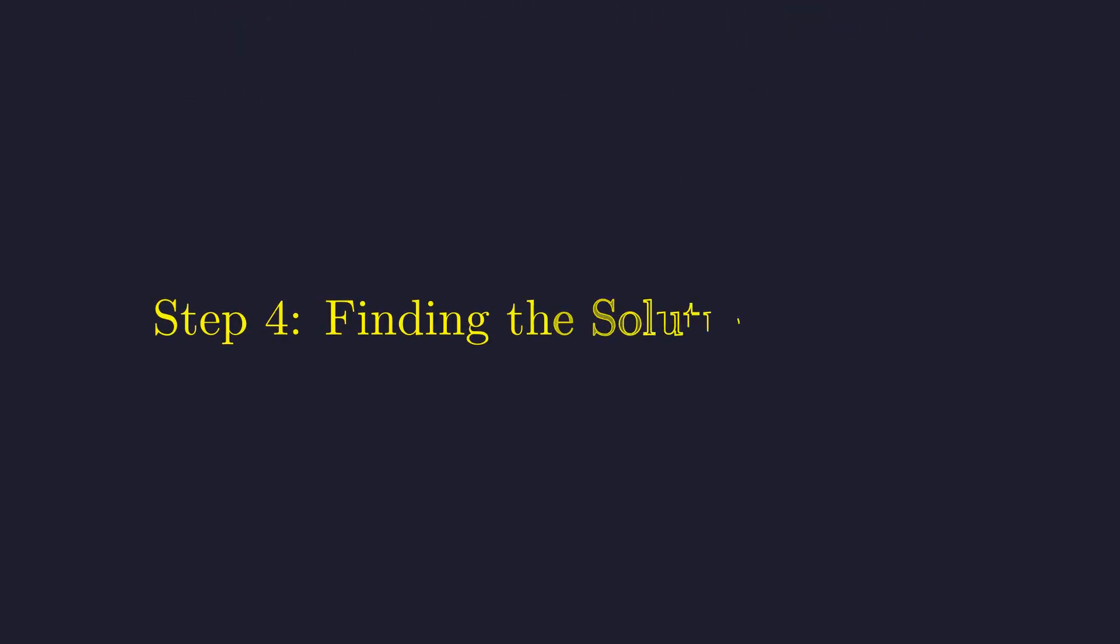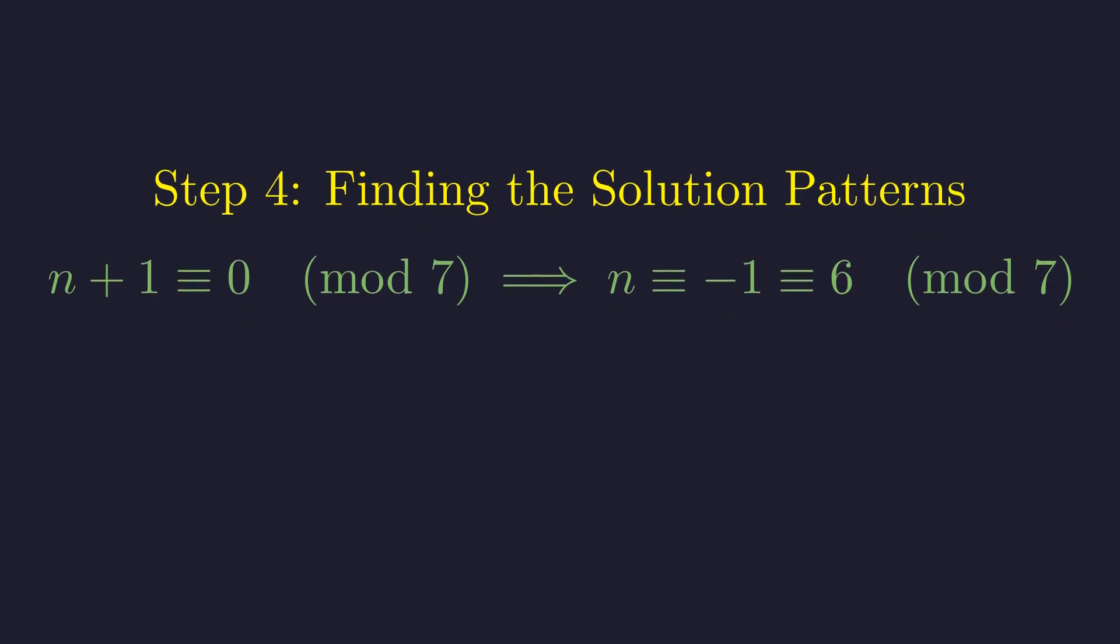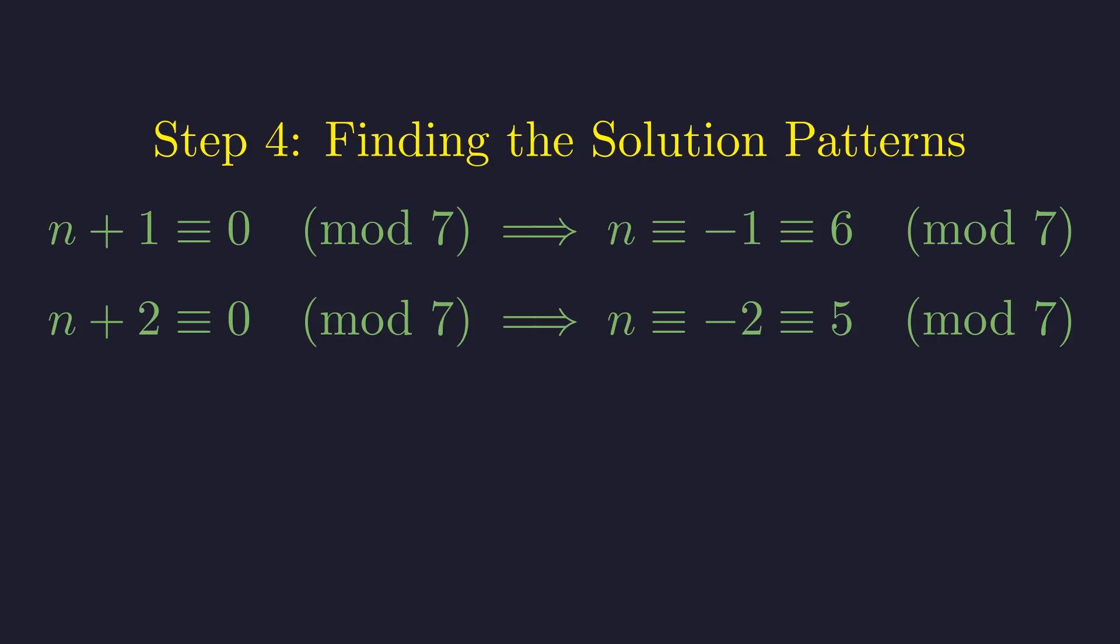We can now solve for the required remainders of n. In the first case, if n + 1 is a multiple of 7, then n must have a remainder of 6 when divided by 7. In the second case, if n + 2 is a multiple of 7, n must have a remainder of 5.